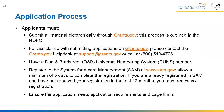The application process: applicants must submit all materials electronically through grants.gov. For assistance, contact the grants.gov help desk at support@grants.gov or call 1-800-518-4726. Applicants must have a Dun & Bradstreet DUNS number, must register in the System for Award Management (SAM) at www.sam.gov, allowing a minimum of five days to complete registration. If already registered in SAM but not renewed in the last 12 months, you must renew. Applicants must also ensure their application meets all requirements and page limits set forth in the NOFO.